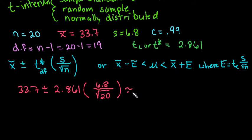You would do 33.7 minus 2.861 times 6.8 divided by the square root of 20. That would give you your lower value, which I already calculated for us. I ended up with 29.3498.